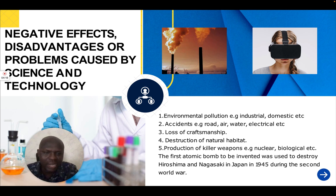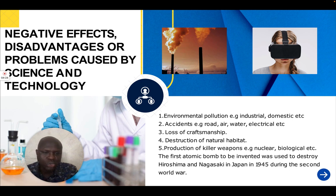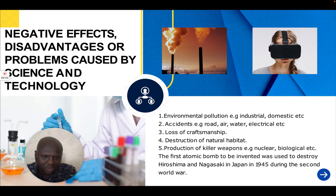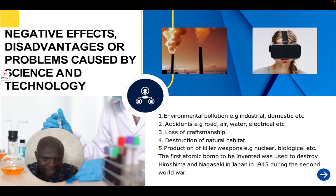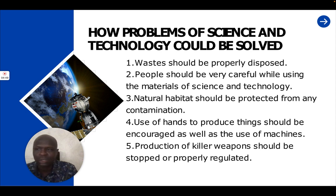Then, there is production of killer weapons. It is due to science and technology that we are able to produce killer weapons, like nuclear, biological, and so on. It will interest you to know that the first atomic bomb to be used was deployed to destroy Hiroshima and Nagasaki in Japan in 1945 during the Second World War. These are the negative aspects of science and technology.